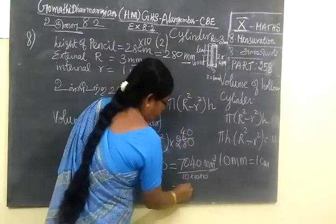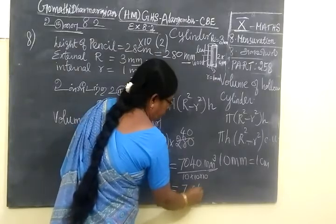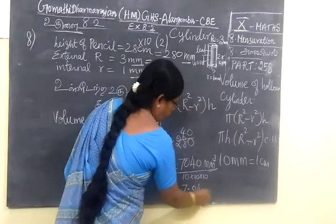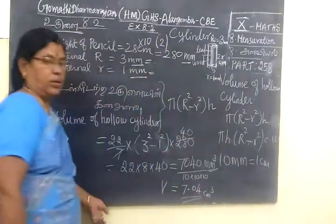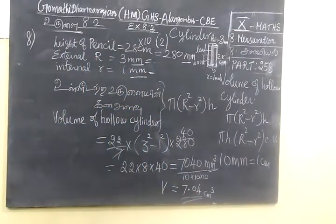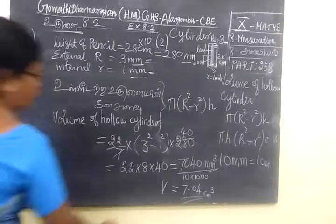Three zeros, so 3 decimal points. 7.04 centimeter cube. Volume is 7.04 centimeter cube.